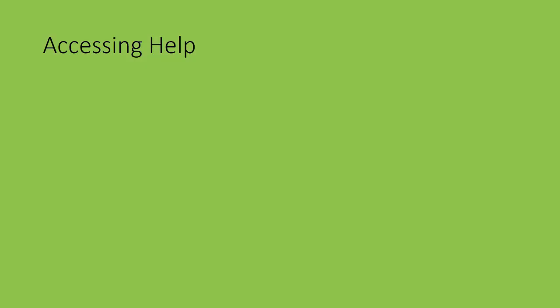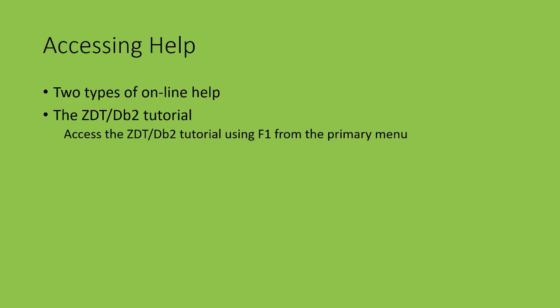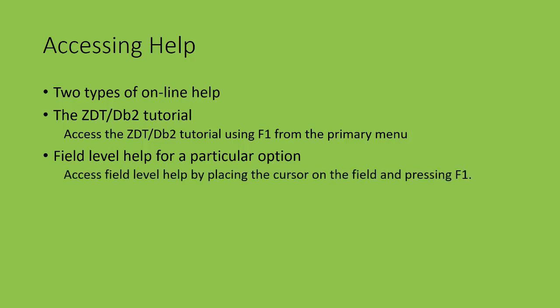The final topic in this presentation is help and how to access it. There are two types of online help. These are the ZDataTools DB2 Component tutorial — you access the tutorial using F1 from the primary menu or from any options panel. The second type is field level help for any option. There is a field level help panel for every option in ZDataTools DB2 Component.